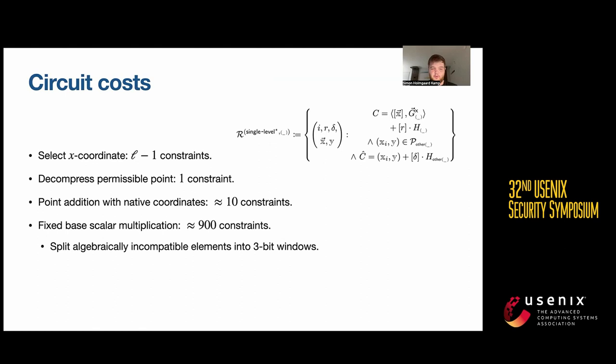The way we compute it is to split the secret scalar into three-bit windows of eight possible values each and then have lookup tables with these eight possible values and then summing over all of these. This is by far the most costly thing of the relation. For that reason, we have pretty shallow trees.